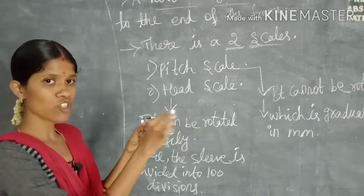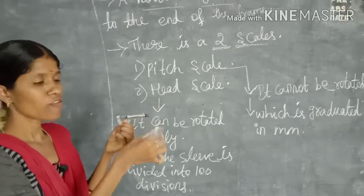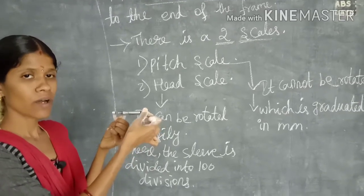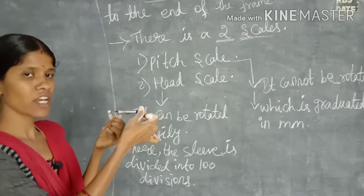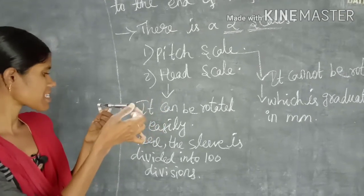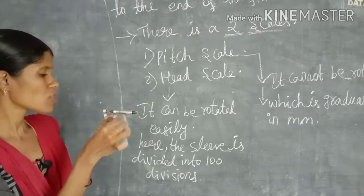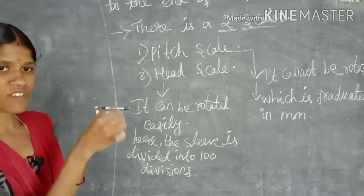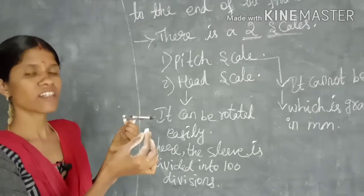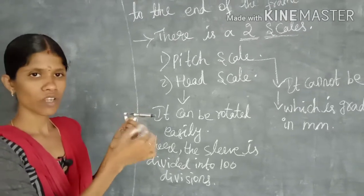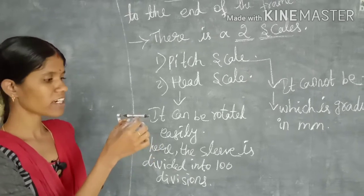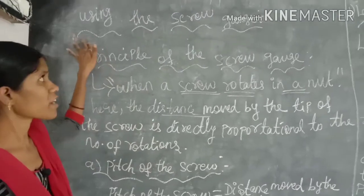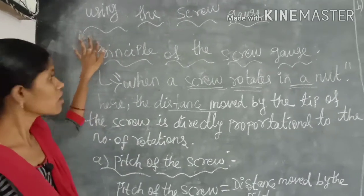The head scale, unlike the pitch scale, can be easily rotated — it is not fixed. The readings on the head scale are divided into 100 divisions, starting from 0 up to 100.